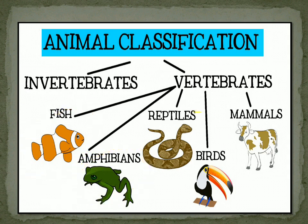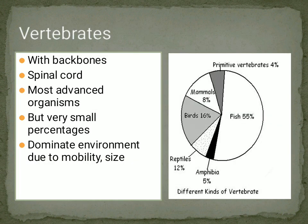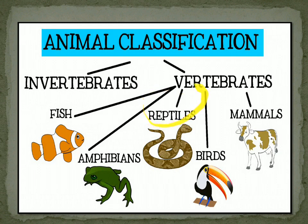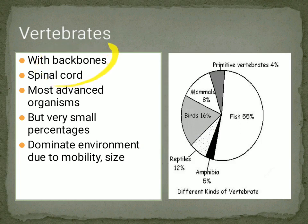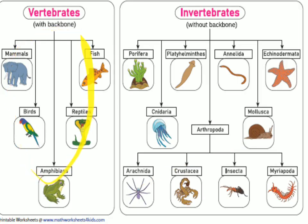Vertebrates include fish, frogs, snakes, birds, and mammals — milk-giving animals. The animal kingdom has unicellular single-celled organisms like protozoa, then multicellular invertebrates — sponges, worms, arthropods, molluscs — and vertebrates which have a backbone and spinal cord. The world has far more invertebrates than vertebrates.